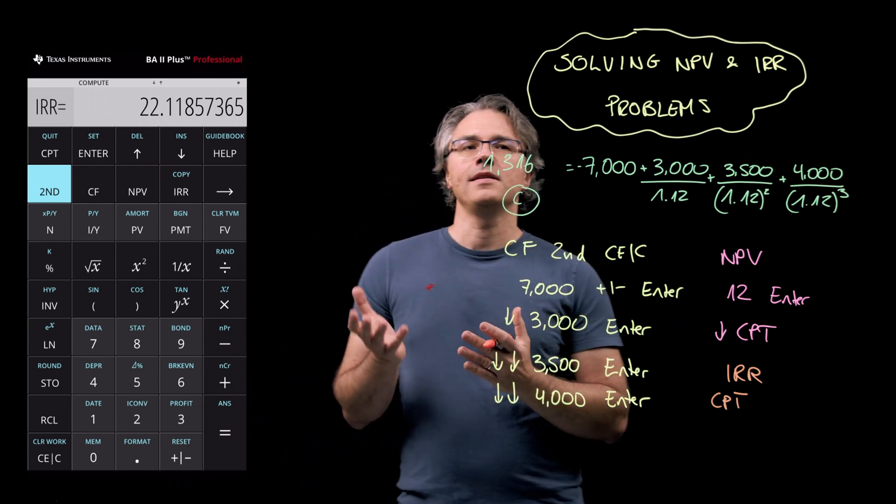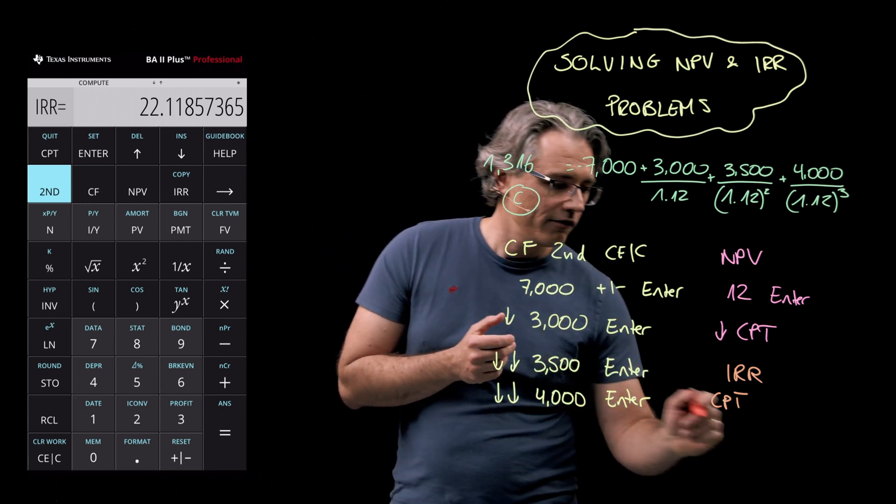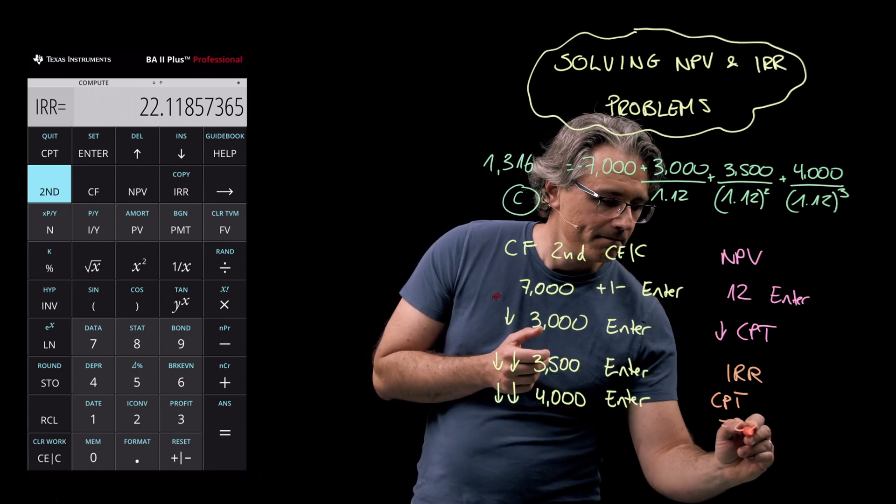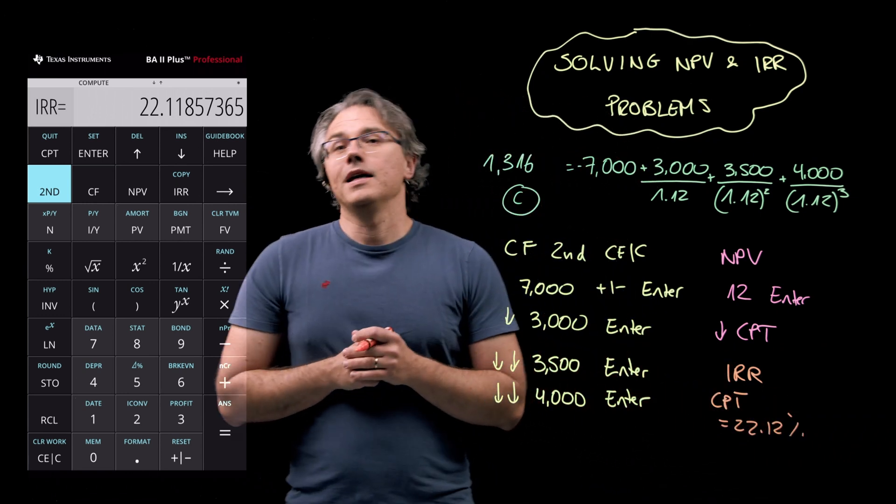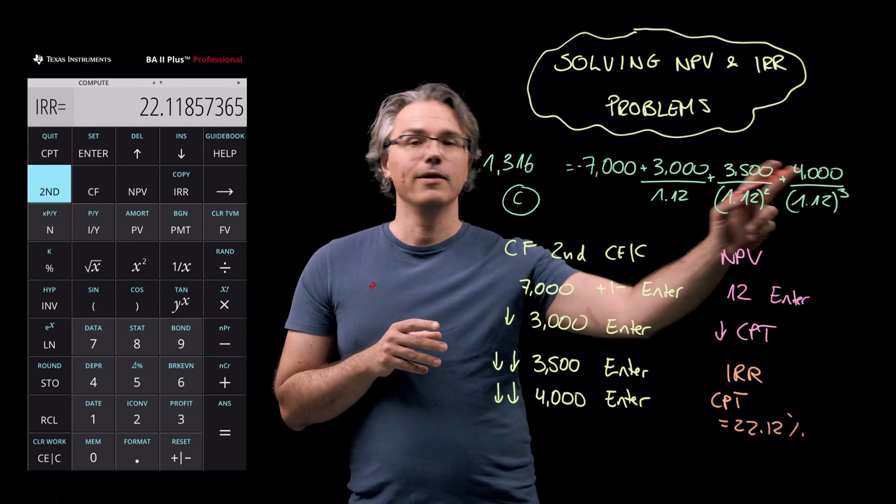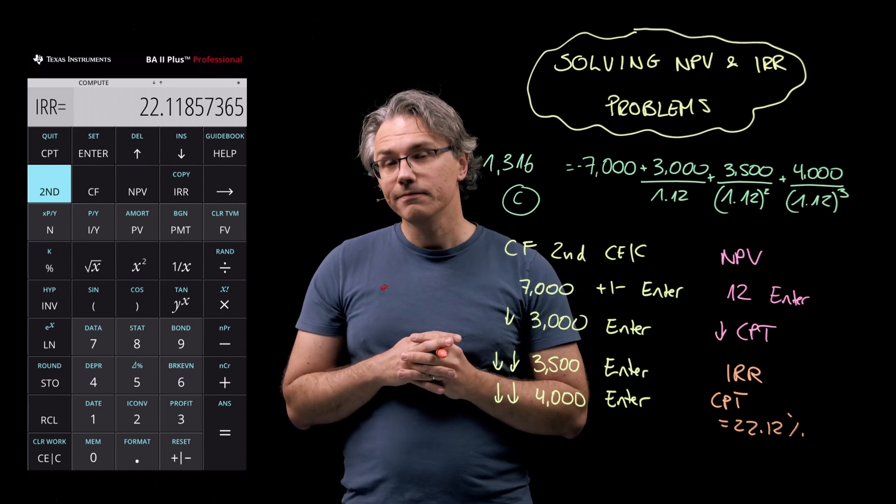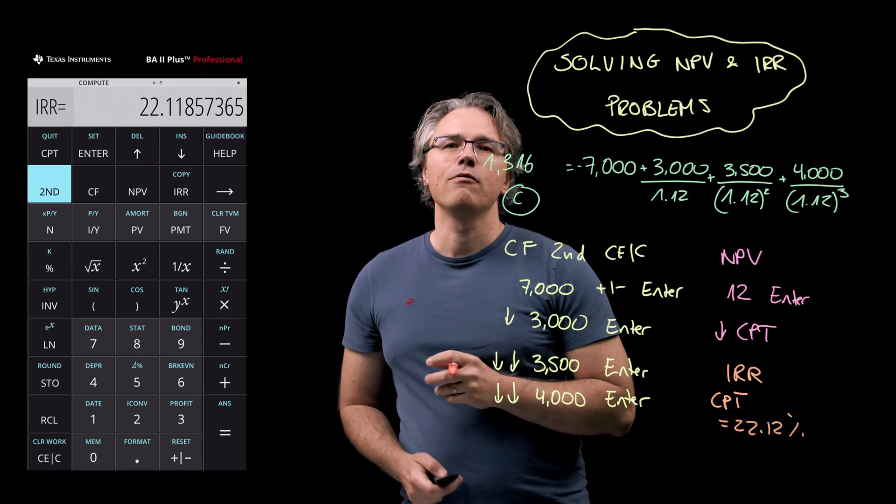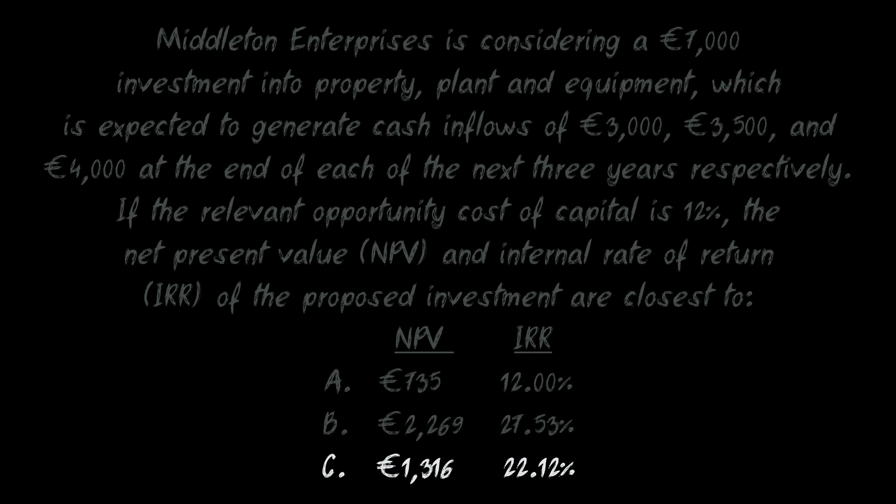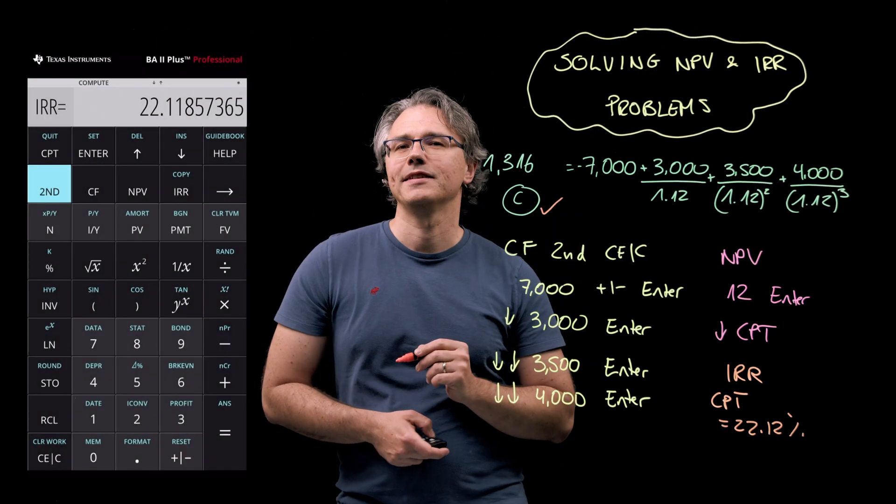And if we do this, we will see the display showing us a result of 22.12%. Implying that this is the IRR of the cash flows which are stored in the cash flow worksheet. If we now check the answers, we can see that the correct NPV and IRR combination is indeed given by C.